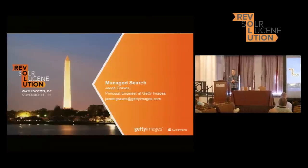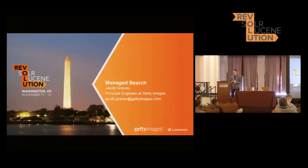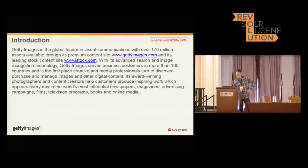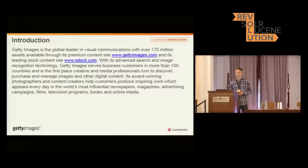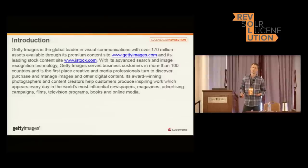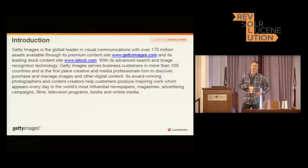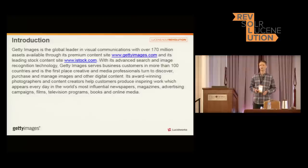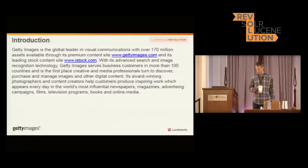My name is Jacob Graves. I'm a principal engineer at Getty Images in Seattle and I'm here to talk about managed search. At Getty Images we are the global leader in visual communication with over 170 million assets available through our two main websites, Getty Images and iStock. If you've encountered our name, it's most likely you saw us as the credit on a picture accompanying a news story. But editorial photojournalism, although it's the most eye-catching part of what we do, it's only one small part. We also do a lot in the creative sphere, also called stock. We do music, we do film, but primarily we do images — that's what I'm going to be talking about here today.